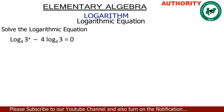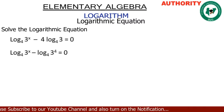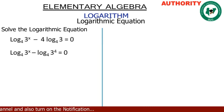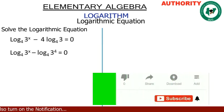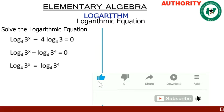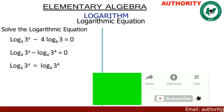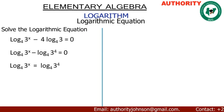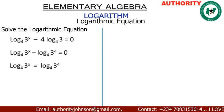We have log of 3 raised to power x, base 4. Taking the 4 to the front as an exponent, we get minus log of 3 raised to power 4, base 4, equal to 0. Moving the right-hand term across, we have log of 3 raised to power x, base 4, equal to log of 3 raised to power 4, base 4.